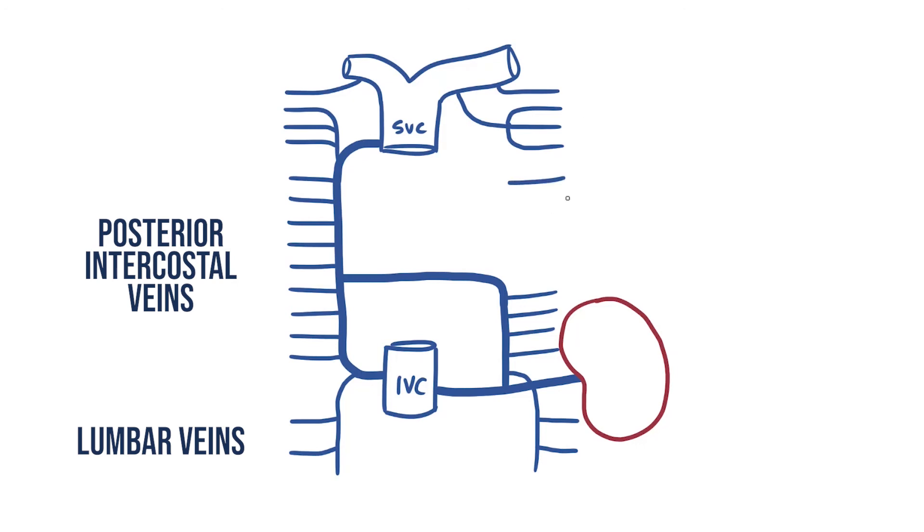The remaining veins unite and form the accessory hemi-azygos vein. This travels down the chest before taking a sharp right turn and meeting the azygos.